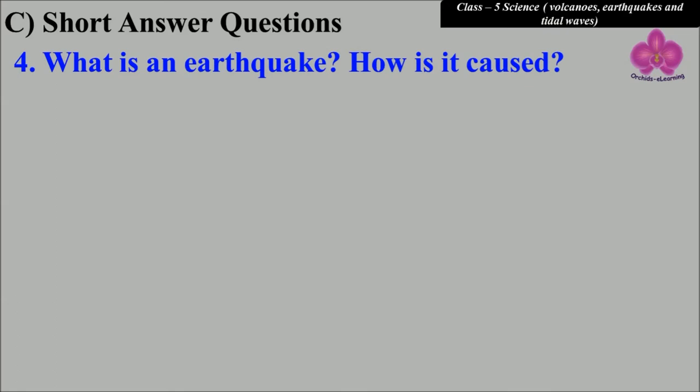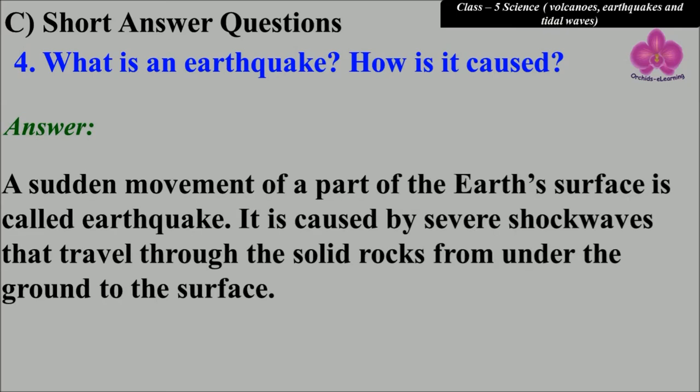is an earthquake? How is it caused? A sudden movement of a part of the earth's surface is called earthquake. It is caused by severe shock waves that travel through the solid rocks from under the ground to the surface. What is lava? Volcanoes are cracks in the